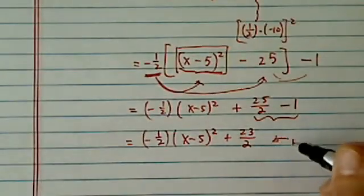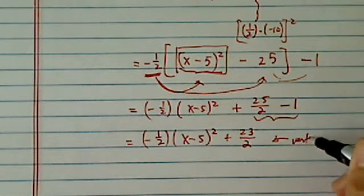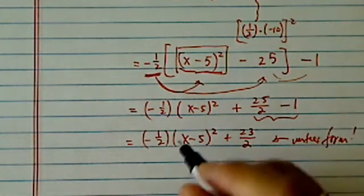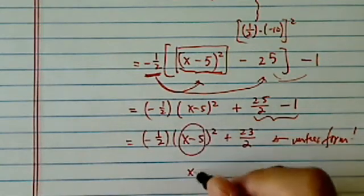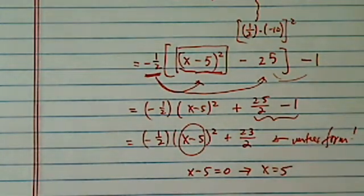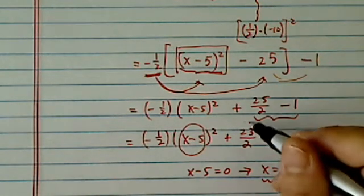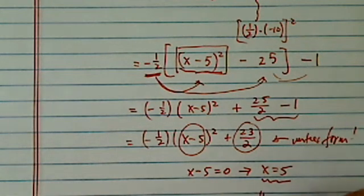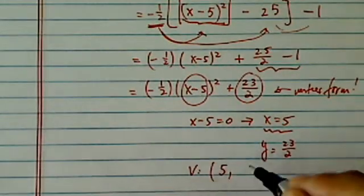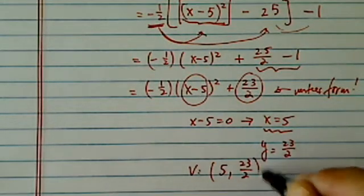This is the vertex form. When we read the vertex form, I'm going to set this one equal to zero — that gives x equal to 5. So the vertex x-coordinate is 5. And then I'm going to take this number as it is: y is equal to 23 over 2. So my vertex has coordinates x equal to 5, y equal to 23 over 2.